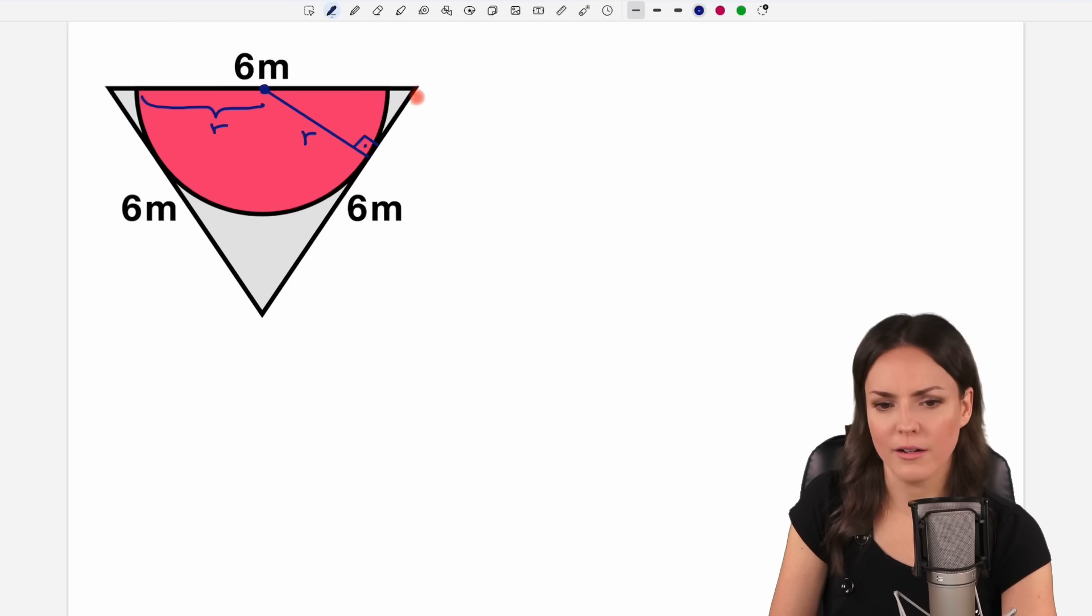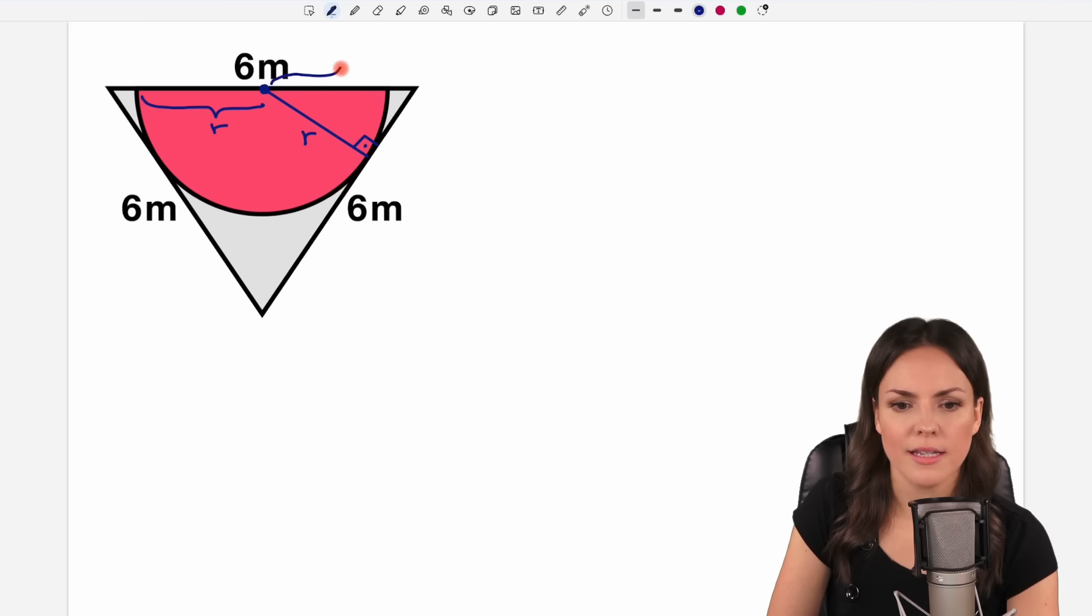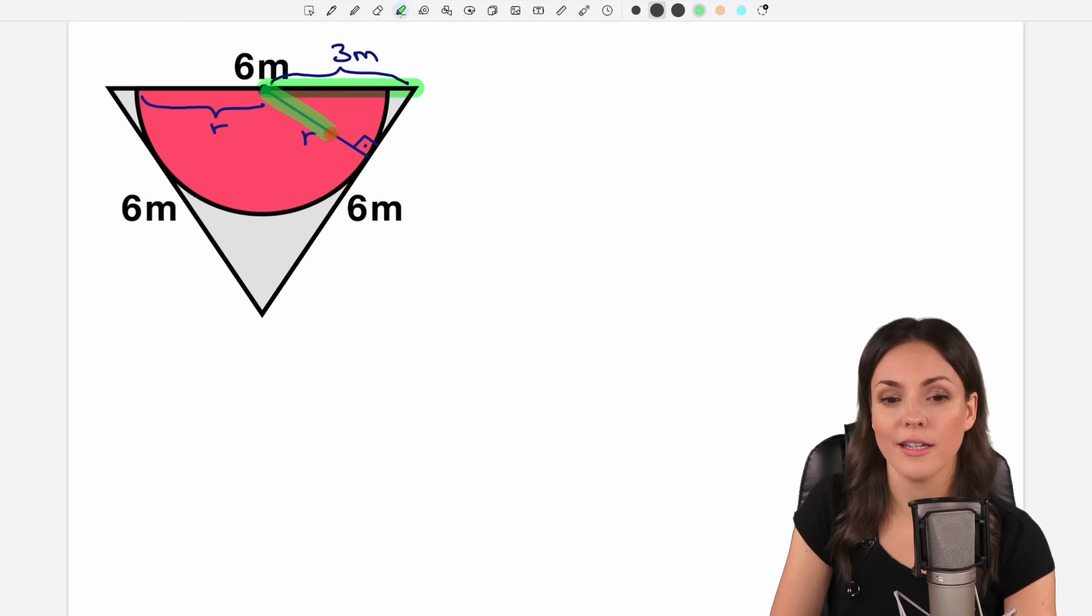What do we know about our triangle? Well our radius is part of the triangle which is great. The length of this side here is half of the entire side. So six meters divided by two equals three meters. Then we know the length of this side. We want to find out the length of this side. We don't know the length of this side though.